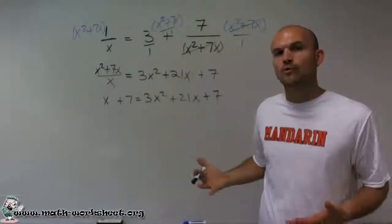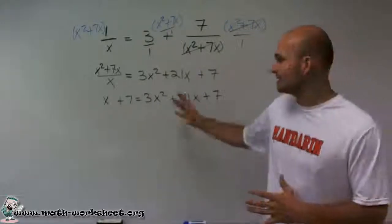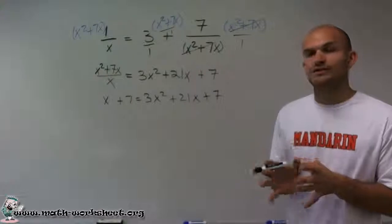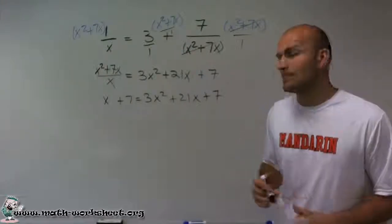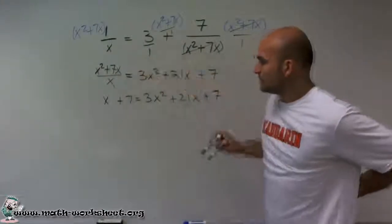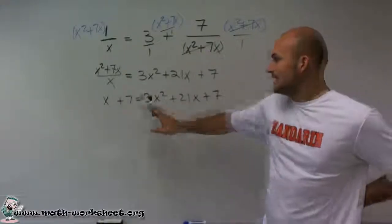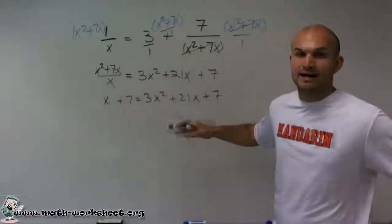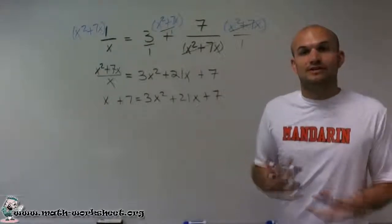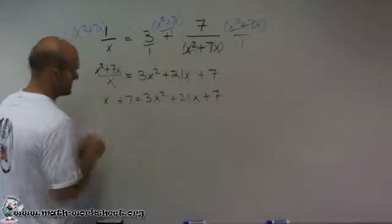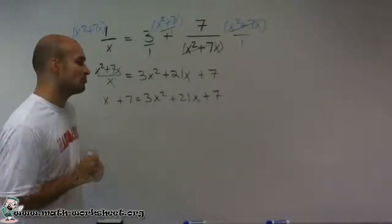But the important point is if we can't solve by the square root method, or like isolating our variable, getting it to one variable, then what we're going to do is we're going to have to use the zero product property. So for what I'm going to do here is I can combine some of these x's together. I've noticed since x and 21x, those have the linear factor of x, so I can combine them. What I'm going to do is I'm going to get this to equal to zero, so I can use the zero product property.